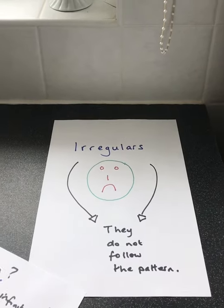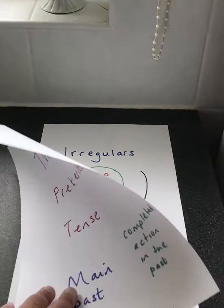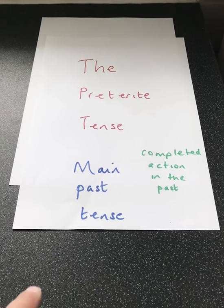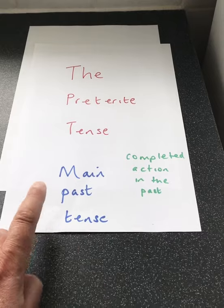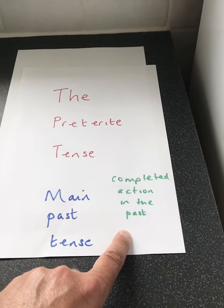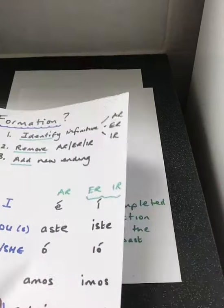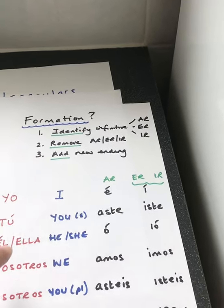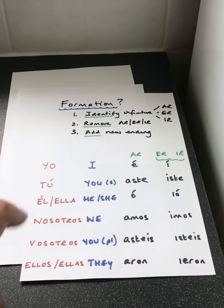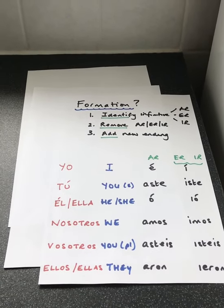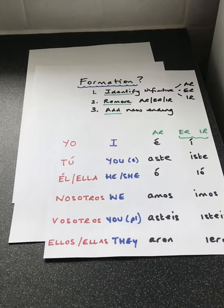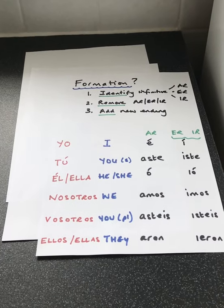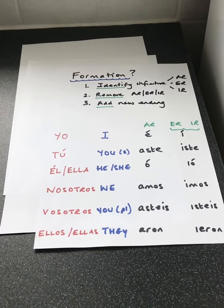Okay, so just to recap. The preterite tense — it is the main past tense. It refers to a completed action in the past. You must know your stages: identify, remove, and add. And you are going to have to learn your endings as well. You cannot get a C grade at GCSE unless you know your past tense — your preterite tense — inside out.